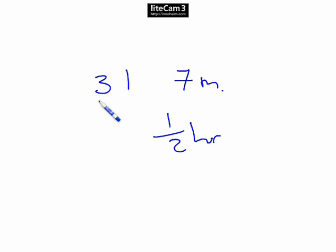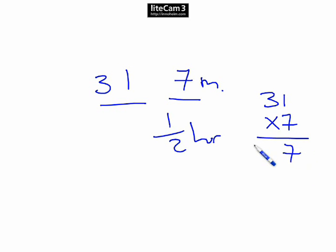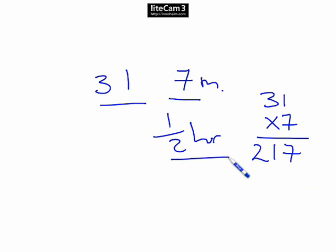So we've got 31 pupils, 7 minutes each. We need to multiply that out: 31 times 7 gives us 217 minutes. They're in half-hour chunks, so what's the minimum number needed?